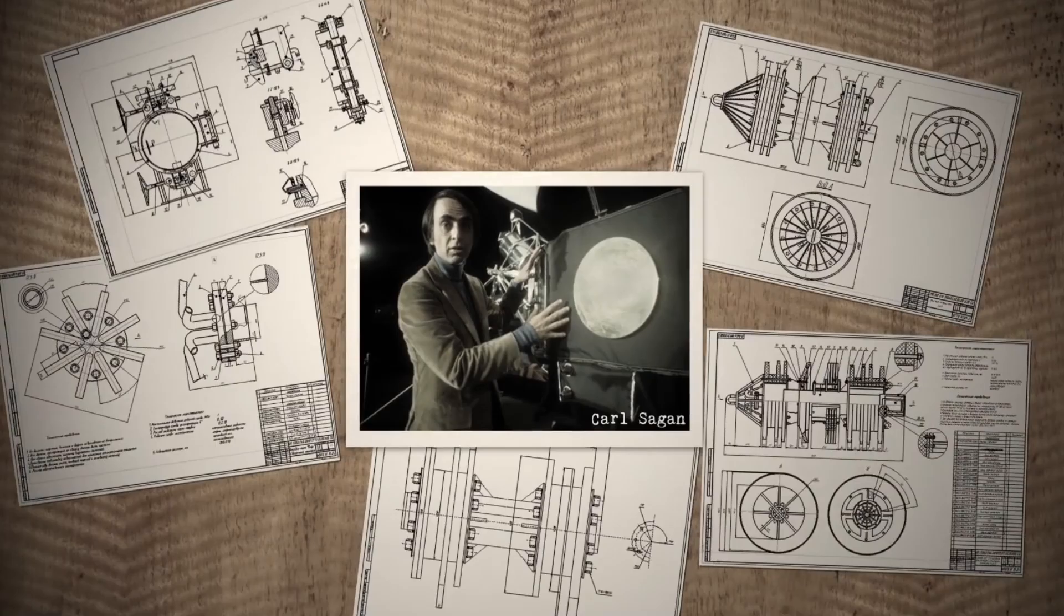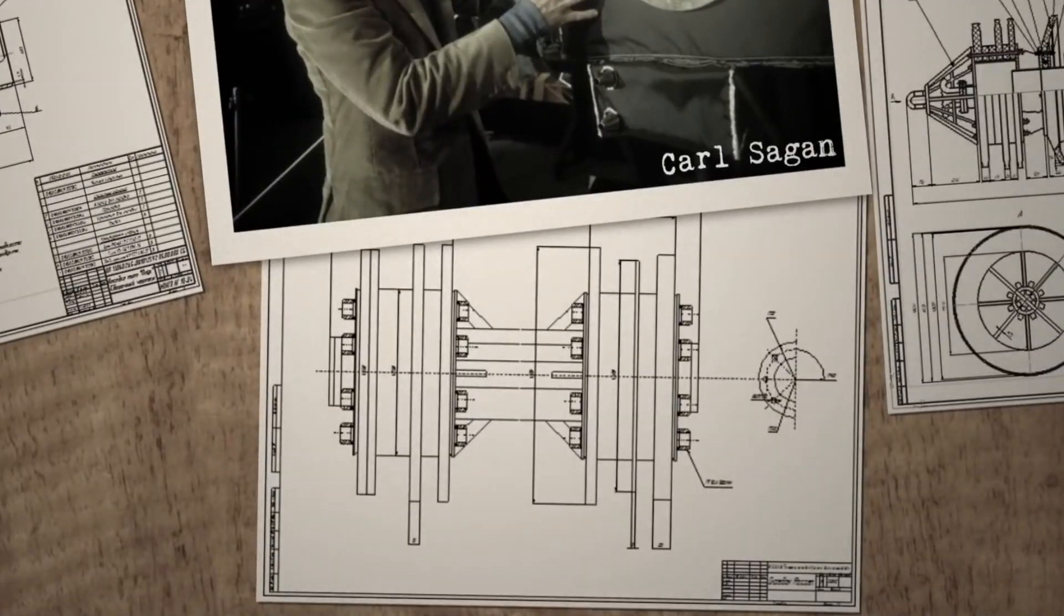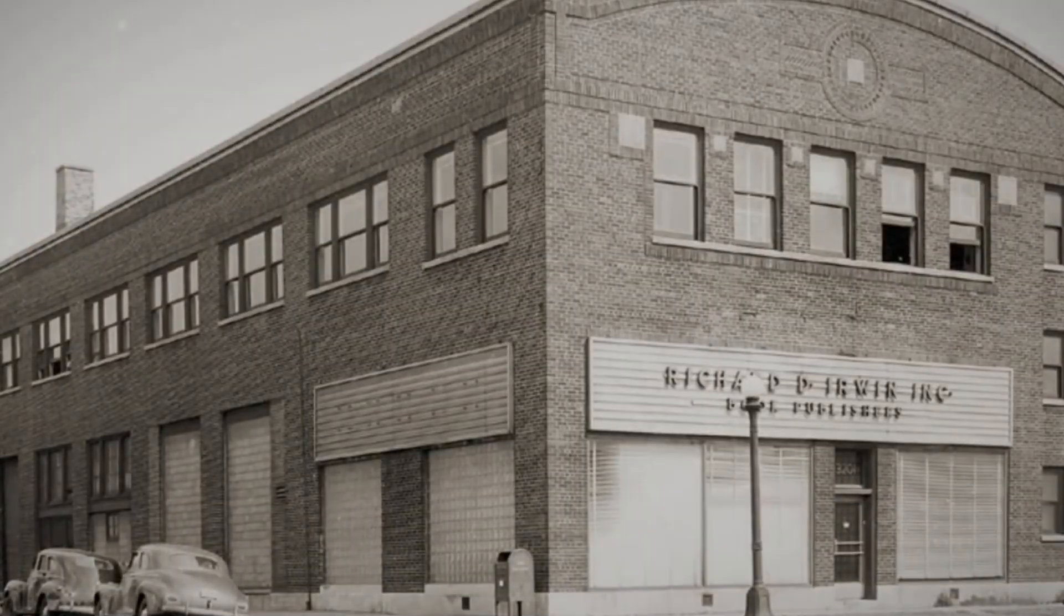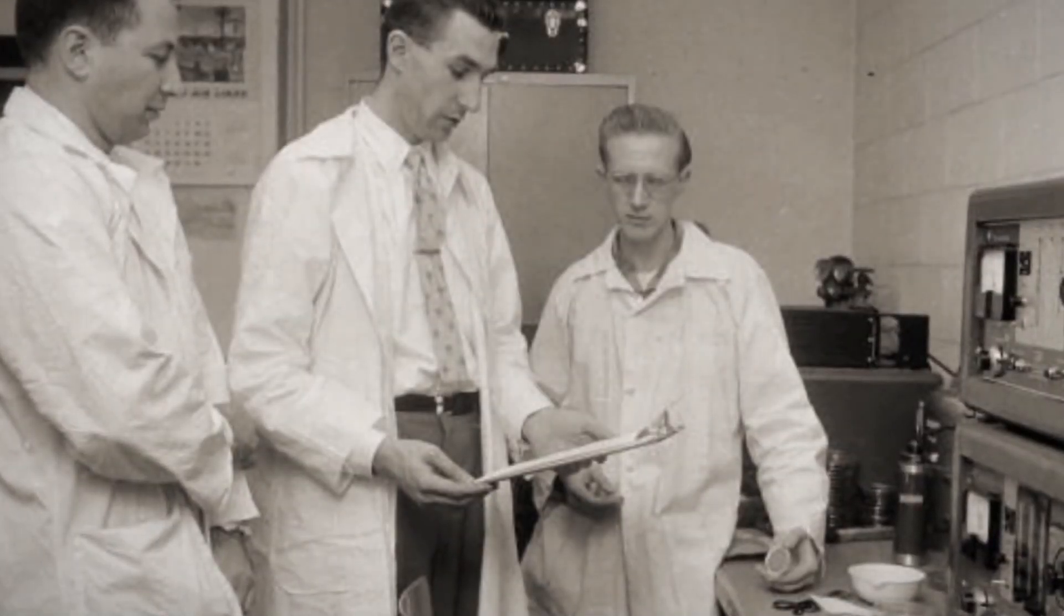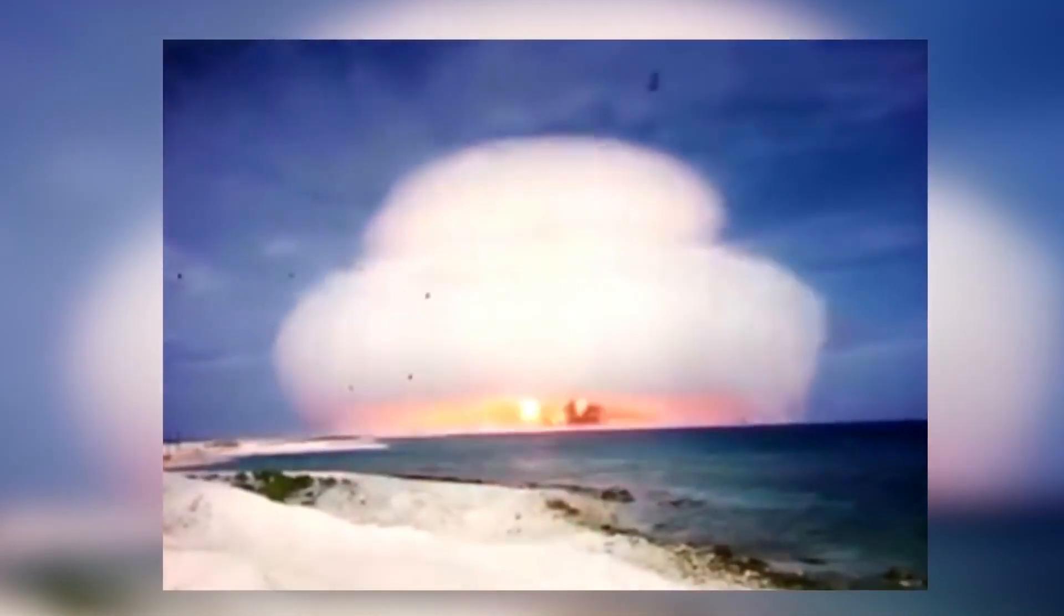With intense political and cultural tensions rising, such extreme measures seemed almost rational. In 1958, the Armour Research Foundation, under the guidance of the US Air Force, devised a plan to study the effects of a nuclear explosion on the lunar surface and assess the potency of nuclear weapons in space.